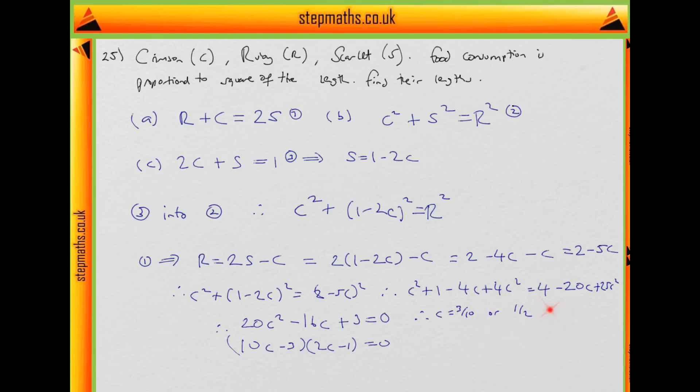What happens if C is a half? Well, if C is a half, we see from this that S is 1 minus 2C times a half is 1. So 1 minus 1, so S would be 0. So that means we cannot have C being a half.